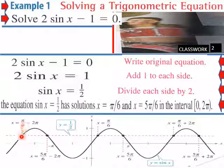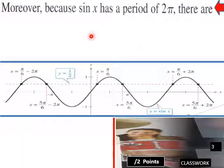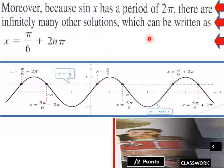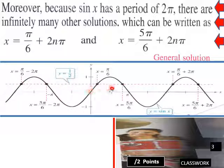So when sine x equals 1 half, we have x equals pi over 6 minus 2 pi, pi over 6 plus 2 pi, and pi over 6. The y equals 1 half line is right here. So wherever your sine curve crosses the line y equals 1 half, those are your solutions. Moreover, because sine x has a period of 2 pi, there are infinitely many other solutions, written as x equals pi over 6 plus 2n pi, and x equals 5 pi over 6 plus 2n pi.